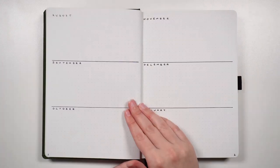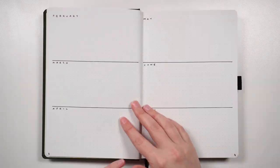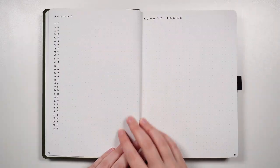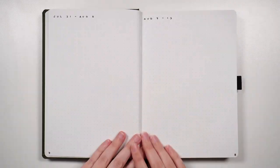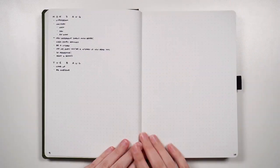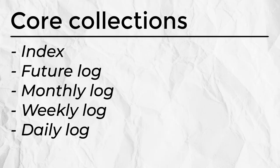Core collections are the collections that make up the foundation of the bullet journal system. They are the index, the future log, the monthly log, the daily log, and more recently the weekly log.